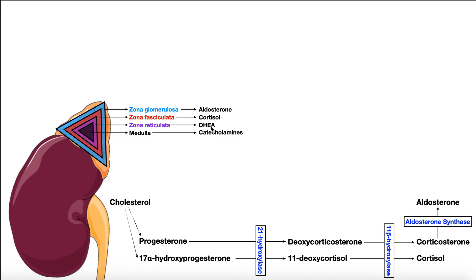There's another androgen called androstenedione. These three hormones — aldosterone, cortisol, and the androgens made by the zona reticulata — are all steroid hormones. And steroid hormones ultimately come from cholesterol, which is the parent steroid.